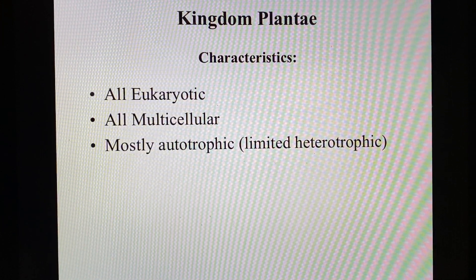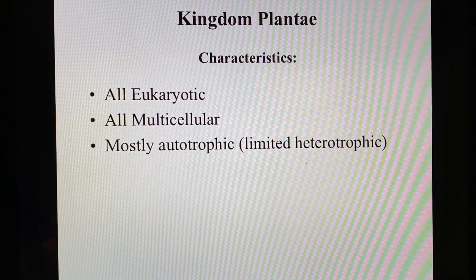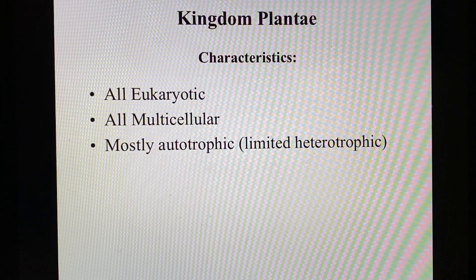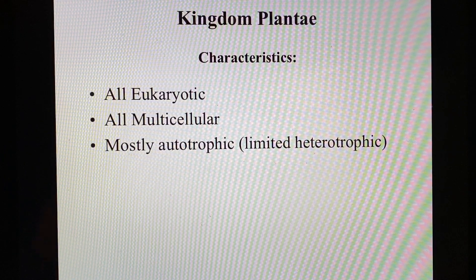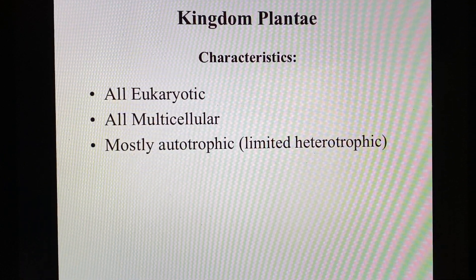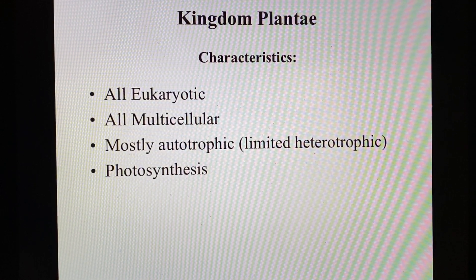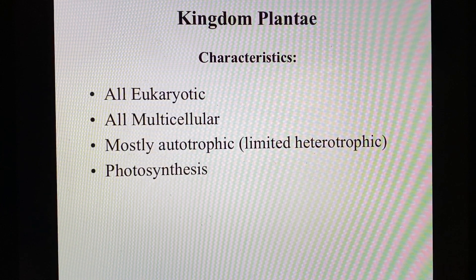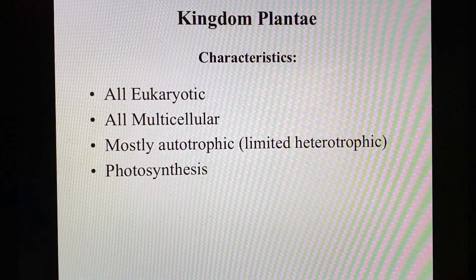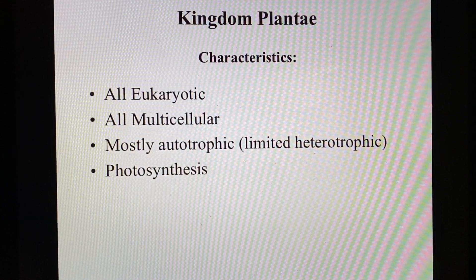Mostly autotrophic — almost all of them make their own food, but there are a few versions like the Venus flytrap that can actually move and trap insects and digest them heterotrophically. So mostly autotrophic, almost overwhelmingly autotrophic. They all do that through photosynthesis. We're not going to go into the photosynthetic process because Mrs. Walzer will do that next year, but that's using sunlight to generate sugar, which we've talked about a few times.